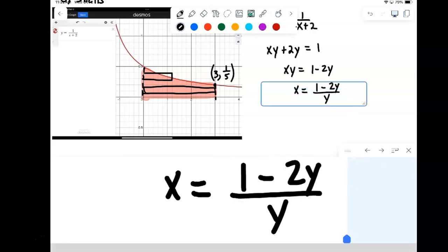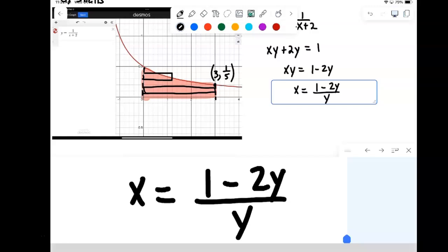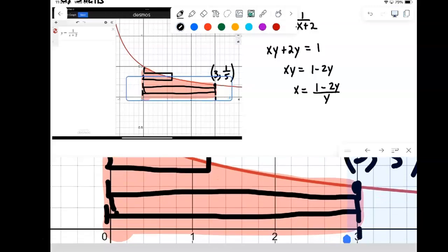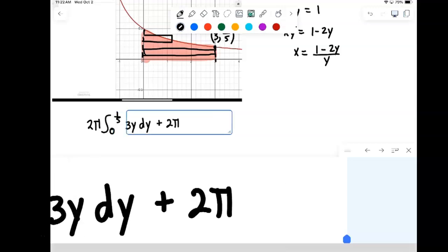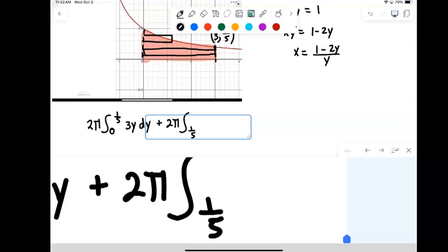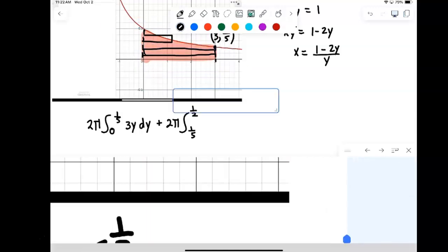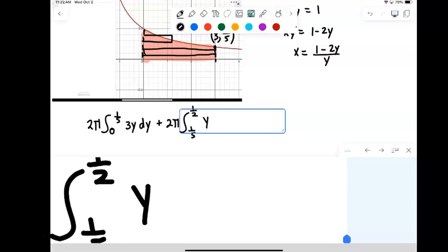Now, we can simplify that function, but it's actually not going to matter. It's going to come out in the wash when we do our shell method. Because remember, shells, the integral is two pi times x times your width function. Or, in this case, two pi times y times your width function. So, this is going to be two integrals. So, we have two pi integral zero to one fifth of y times three, or just three y dy, plus two pi times the integral from one fifth to one half of y times our width function, one minus two y over y dy.